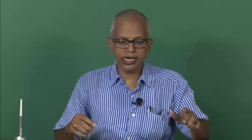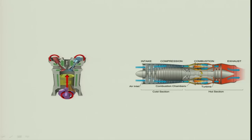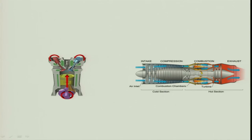If you look at the engines shown here — this is basically a piston-cylinder engine. It can be a diesel engine, it can be a gasoline engine. I can also use biodiesel, or various other gases like producer gas or CNG. This is also a gas turbine engine, and this is your combustor.